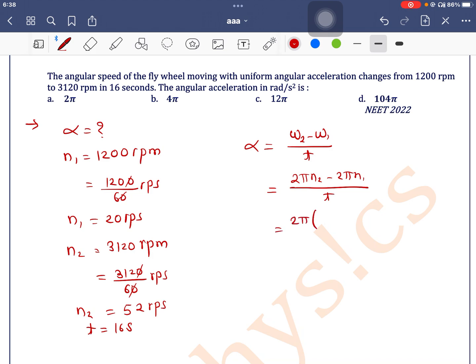So 2π into n₂, which is 52, minus 20, divided by time 16. This equals 2π times 32 divided by 16. 16 times 2 is 32, 2 times 2 is 4π. So the answer is 4π radian per second square. Option b is the correct one.